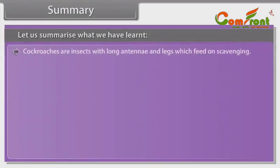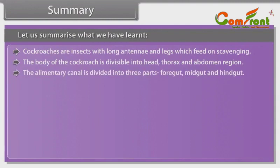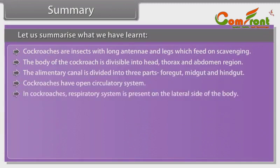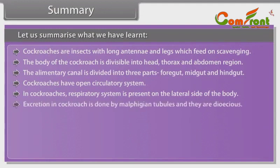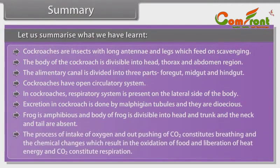Cockroaches are insects with long antennae and legs which feed by scavenging. The body is divisible into head, thorax and abdomen. The elementary canal is divided into foregut, midgut and hindgut. Cockroaches have an open circulatory system. The respiratory system is present on the lateral side of the body. Excretion is done by Malpighian tubules. They are dioecious. The frog is amphibious; its body is divisible into head and trunk, with neck and tail absent. The intake of oxygen and expulsion of CO2 constitutes breathing, while the chemical oxidation of food constitutes respiration.